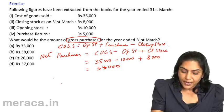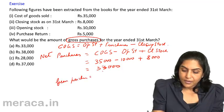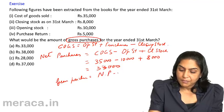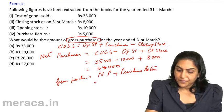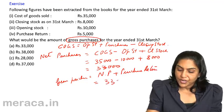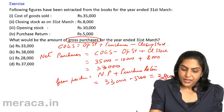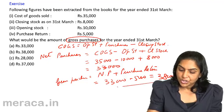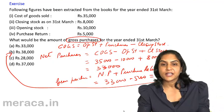Gross purchases equals net purchases plus purchase returns. That is 33,000 plus 5,000, which equals 38,000. Therefore, the answer is option B: 38,000.